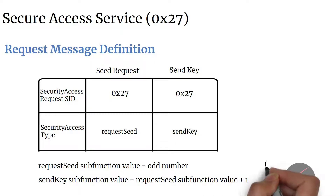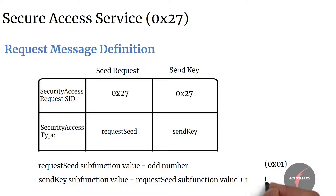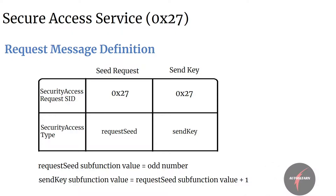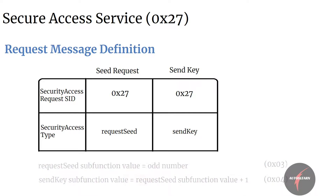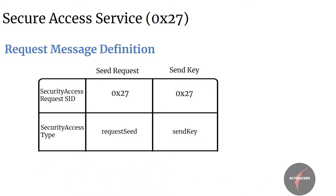For example, if the request seed is 1 then the send key would map to value 2. And if the request seed is of value 3 then the send key would map to value 4. Let's now look into different classifications of sub-function values.